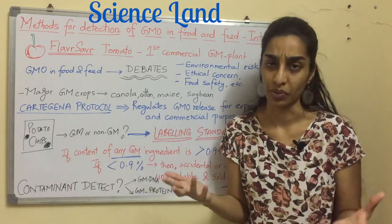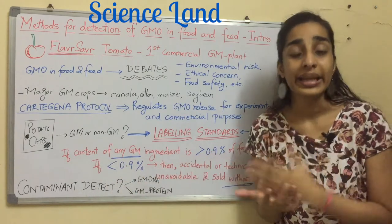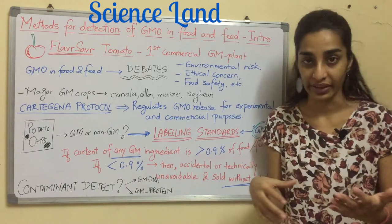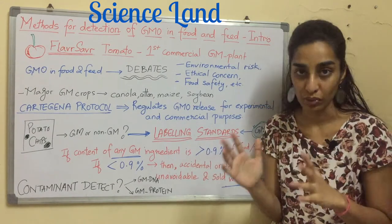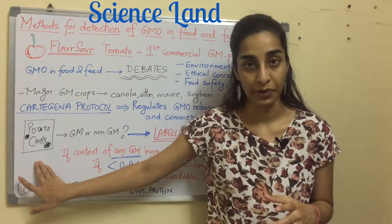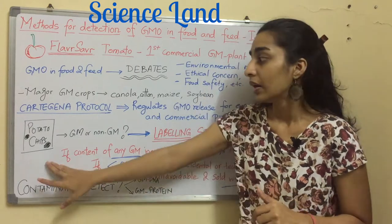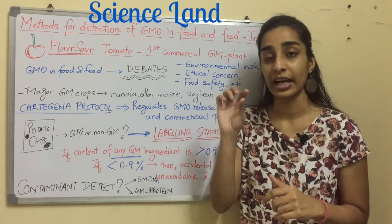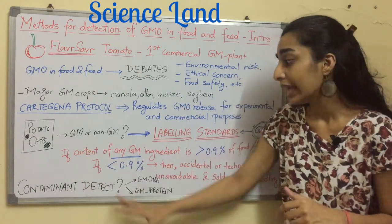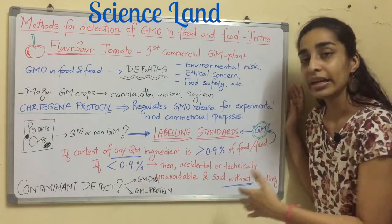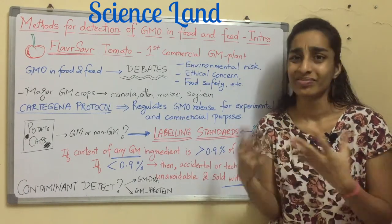How are we going to identify if our food is genetically modified or not? There are certain labeling standards. If the content of any genetically modified ingredient is more than 0.9% of the food, then the term 'GM' — genetically modified — is applied to that particular food. So if my potato chips contain a genetically modified ingredient, the label 'GM' would be specified in the ingredients.